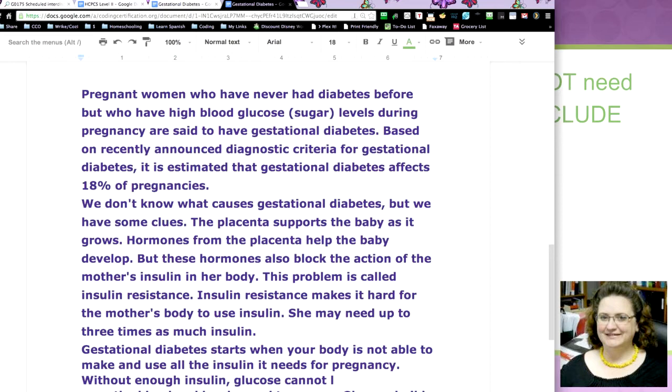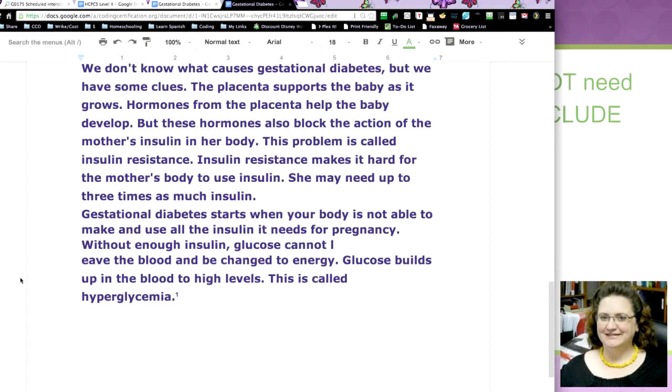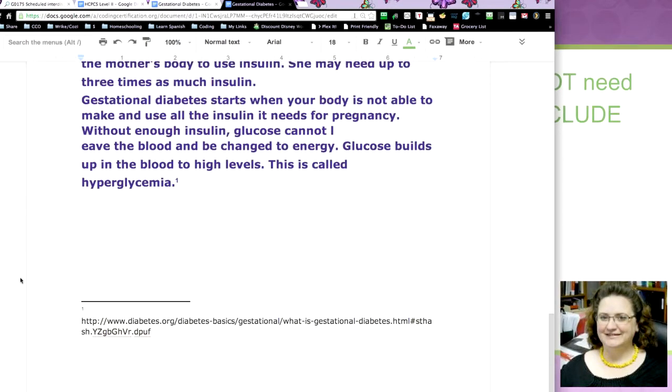So she may actually produce three times as much insulin as needed. Gestational diabetes starts when your baby is not able to make and use all the insulin that your body is producing for the baby and the mother. And without enough insulin, the glucose can't be turned into energy. And if you scroll down just a bit more, there was a great website that this came from, but ultimately what happens is that glucose builds up in the blood and it just gets too high and you have hyperglycemia.